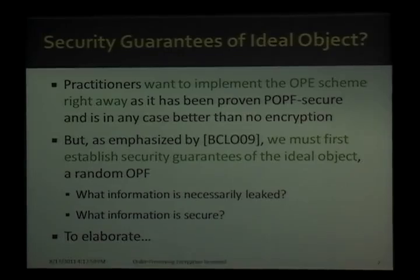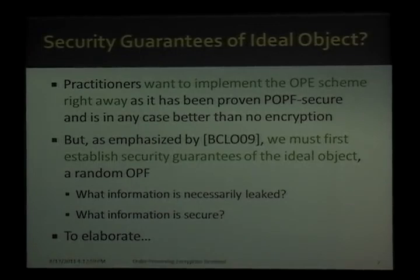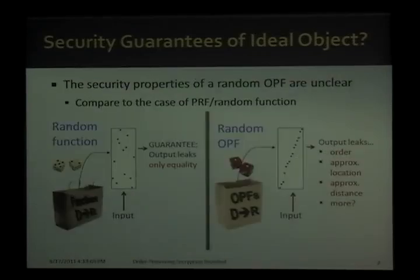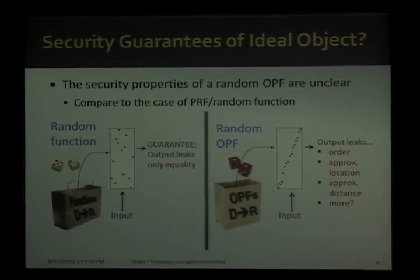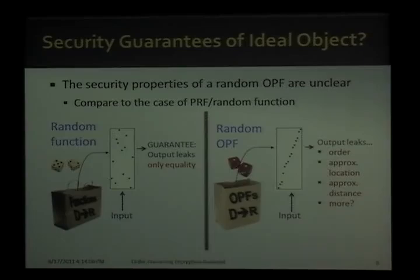In particular, it's not clear exactly what information is necessarily leaked by a random order-preserving function, and what information is secure. To elaborate, let's compare to the case of a pseudorandom function and its ideal object, a random function. For a random function, on distinct inputs the output looks uniformly random, so the output leaks only equality information about input because the function is deterministic, but nothing else.